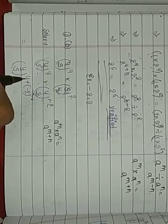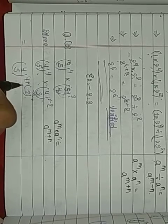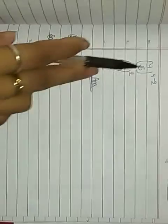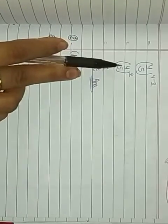We have written 4/5 with the powers added. Now we open the bracket: plus and minus becomes minus, so 4 minus 2. How much is 4 minus 2? It is 2. So we have 4/5 whole power 2. Now we can solve this. 4 to the power 2, and 5 to the power 2. So we can do: 4 × 4 equals 16, and 5 × 5 equals 25. So the answer is 16/25.